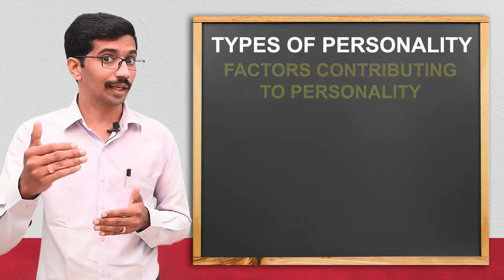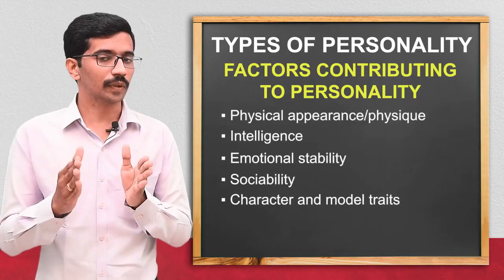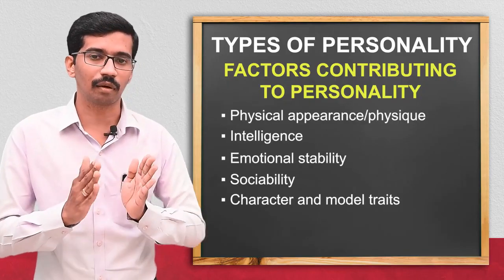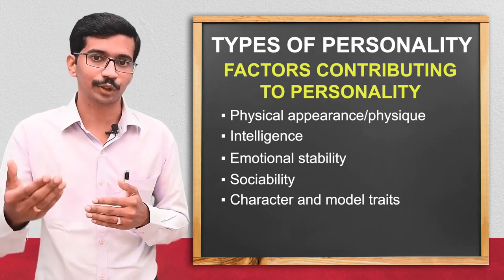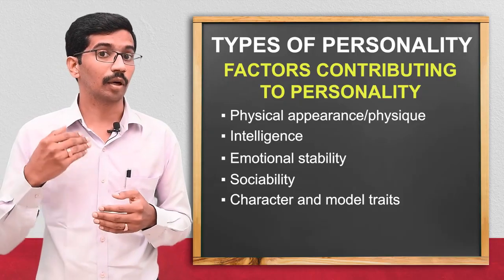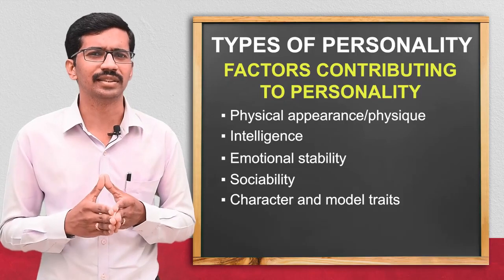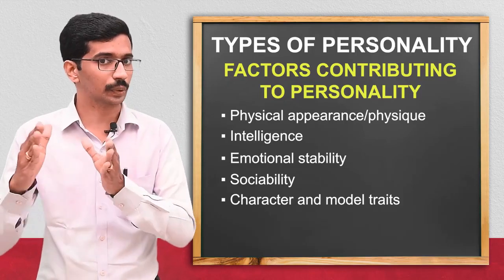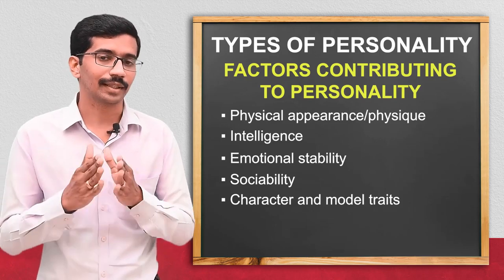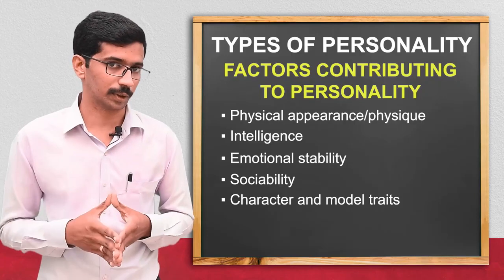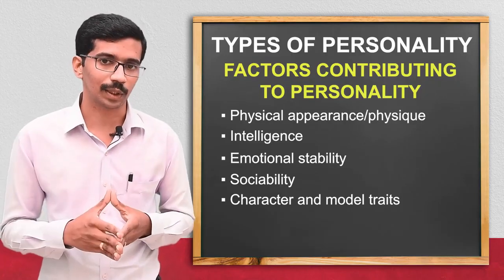Now we will see what are the elements or factors contributing to personality. The first one is the physique or physical appearance of the person. Then the more important part — the intelligence of the person. Then how much the person is emotionally stable, then sociability — meaning how the person is maintaining social relationships — and finally the character and moral traits of the person.